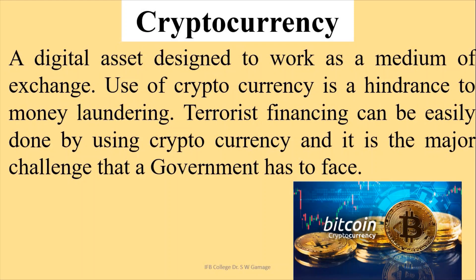Cryptocurrency is a digital asset and a medium of exchange. Bitcoin is an example of cryptocurrency. The problem with cryptocurrency is that even the Central Bank cannot regulate this system. Because of that, a lot of people might use cryptocurrency to do money laundering and terrorist financing. This is the major challenge any government has to face.